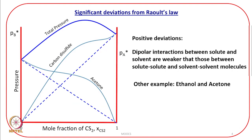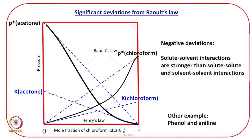One observation: looking at the previous figure, Raoult's law is obeyed when the mole fraction of a component approaches 1. You see that although there are positive deviations in the middle, when mole fraction approaches 1 the component increasingly obeys Raoult's law. Similarly, for acetone at the other end of the composition axis, it obeys Raoult's law as it approaches purity. The same behavior is seen in the negative deviation figure.